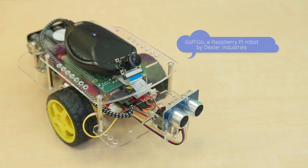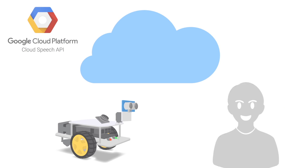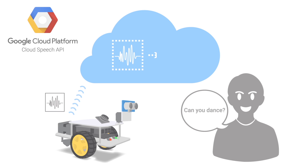Let's see the Speech API in action by calling it directly from a Raspberry Pi GoPiGo robot. The bot can capture audio through its microphone, send it to the cloud, and receive the recognized text in response in real time, with partial results returned while the user is speaking.